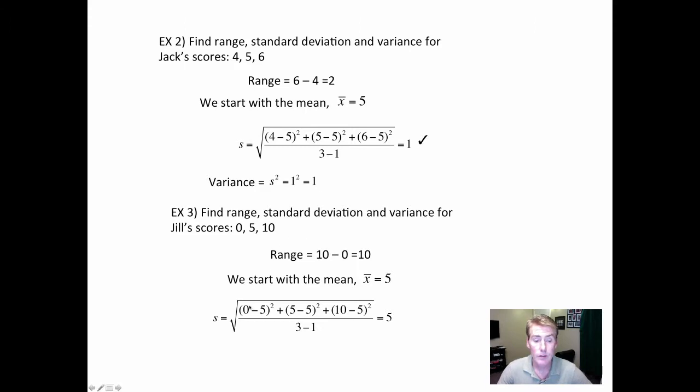And then for the standard deviation for Jill's scores, you take each score—zero, five, and ten—subtract and then square it. So this is going to end up to be 25 and 25 is 50, but divided by two, so that's the square root of 25, which is five.